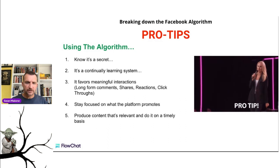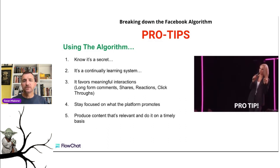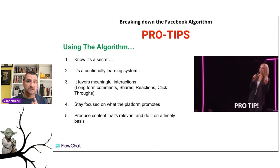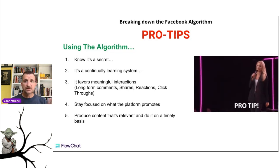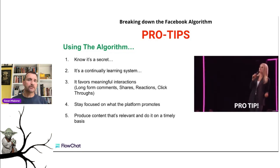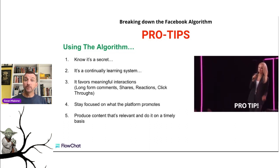Lastly, produce content that's relevant and do it on a timely basis. Set up a cadence that you can post regularly — whether it's once a week, twice a week, five times a week, whatever it's going to be. As long as you're consistent, the algorithm looks for consistency, not spikes. Don't put 50 pieces of content today, wait three months, and then put 50 more. That's not a good cadence. The algorithm looks for people using the platform like a real person and posting on a consistent basis.